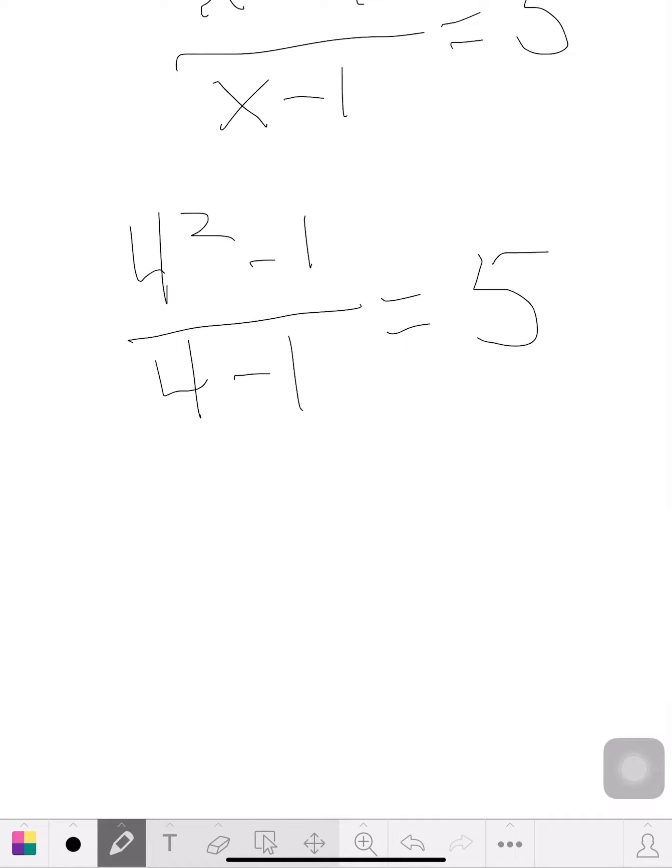So we have 4 squared minus 1 over 4 minus 1 equals 5. So 4 squared is 16, 16 minus 1, 4 minus 1 is 3. So 16 minus 1 is 15 divided by 3 equals 5. So that checks out, we did it. Hey, we did a perfect job.